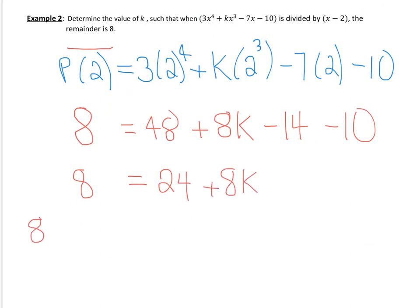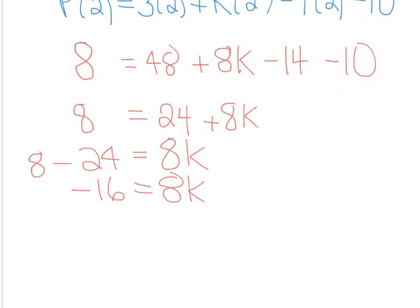So we'll have 8 equals 48 minus 24, so that's just 24 plus 8k. Then we're going to isolate our k. So we're going to get negative 16 equals 8k. Therefore, k equals negative 2. So these are kind of the little application-type questions that we can do with the remainder theorem.